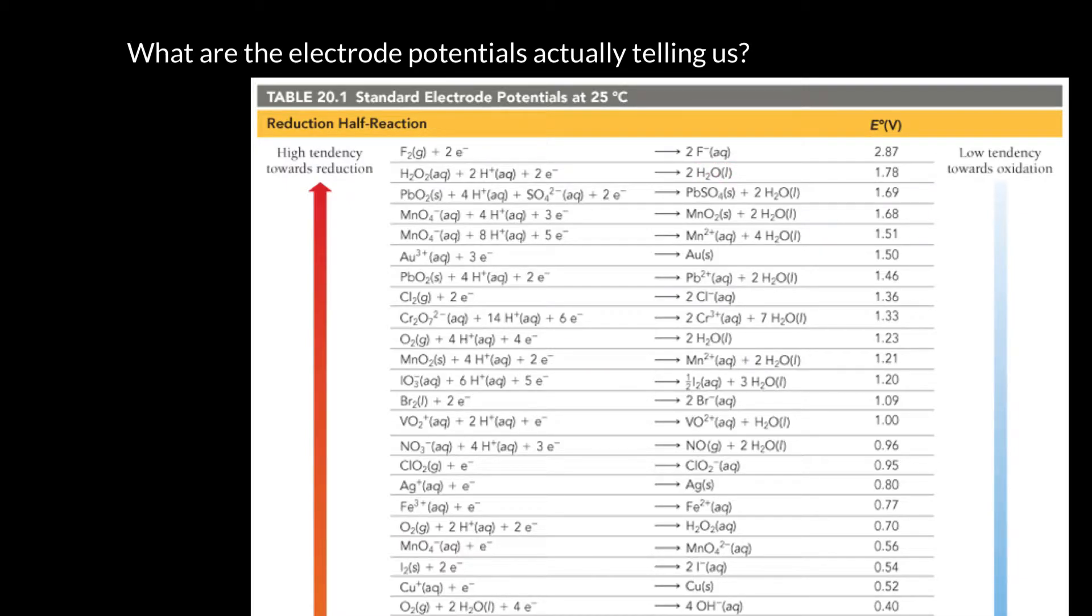So it is excellent at grabbing electrons from things, which means that it is excellent at being reduced. But of course, if something else is losing those electrons, it means it's an excellent oxidizing agent.